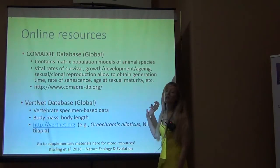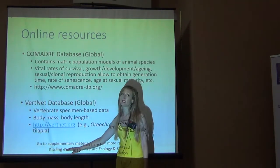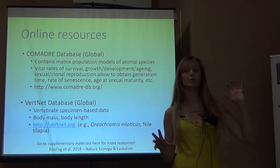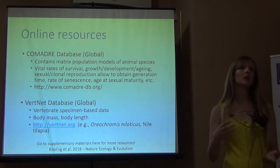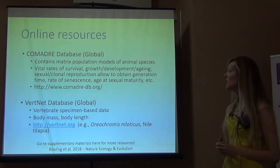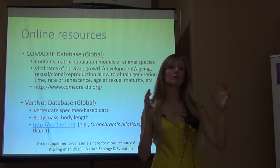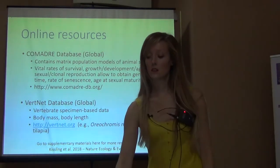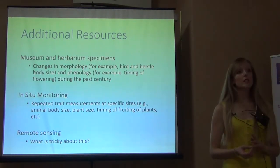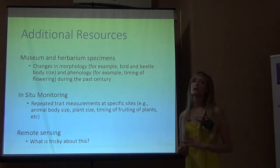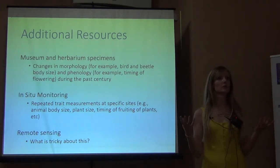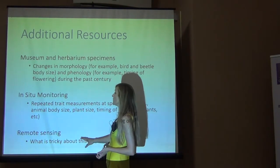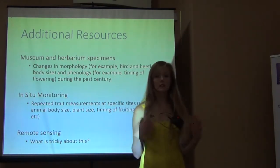So we talked about some of the databases where you can get species trait information. There's also a paper — open access, so everybody can access it — where the supplementary materials contain a table listing all of the databases where you can get species trait information, whether they're open access, whether they're global or regional, and what type of information is available. We also talked about going to museums and herbariums for specimen information, designing your own in situ monitoring, and potentially using remote sensing.